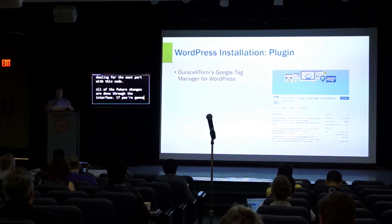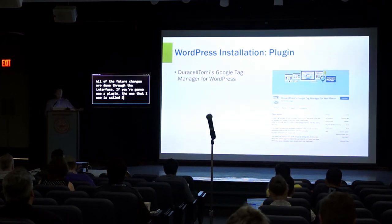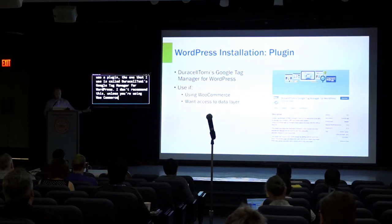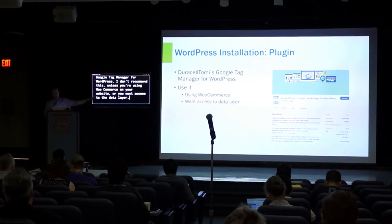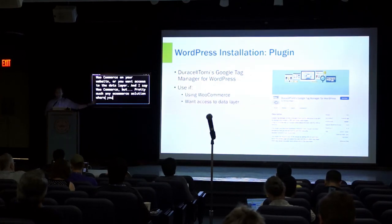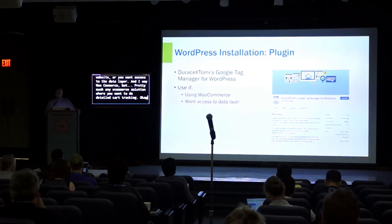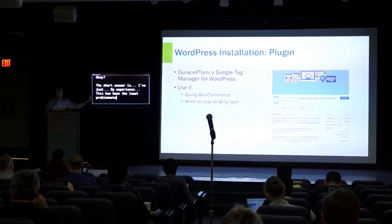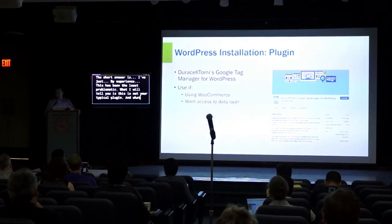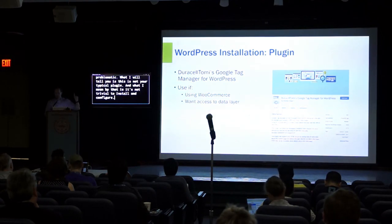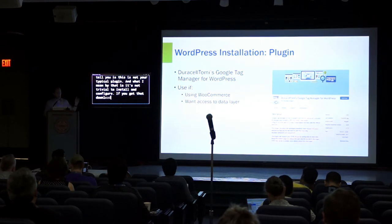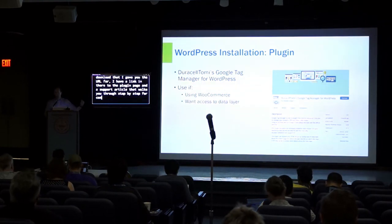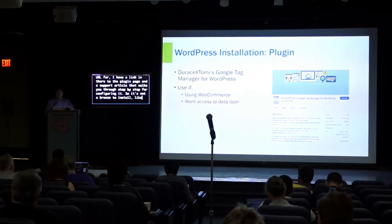If you're going to use a plugin, the one I use is called Duracell Tony's Google Tag Manager for WordPress. I don't recommend this unless you're using WooCommerce on your website or you want access to the data layer for detailed cart tracking. By experience, this has been the least problematic, but I want to tell you this is not your typical plugin — it's not trivial to install and configure. If you get the download I gave the URL for, I have a link to the plugin page and a support article that walks you through step-by-step for configuring.